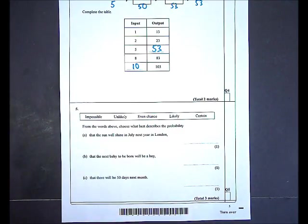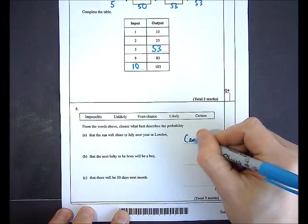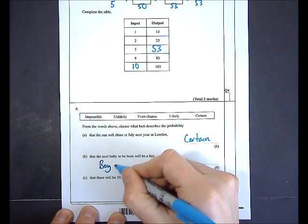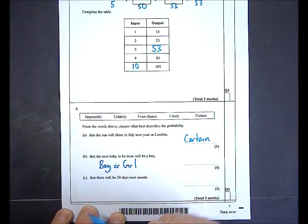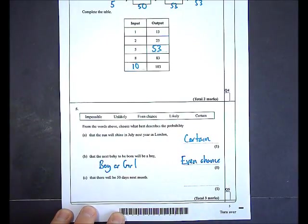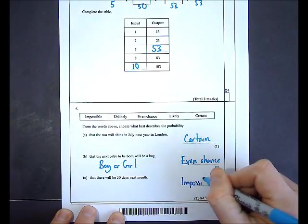In question 5 I'm given five words — impossible, unlikely, even, likely, and certain — and asked to use one to best describe each probability. Part A: the sun will shine in July next year in London — that is going to be certain. Part B: the next baby to be born will be a boy — there are only two options, boy or girl, so roughly 50-50, meaning an even chance. Part C: there will be 50 days next month — the maximum number of days in a month is 31, so that is impossible.